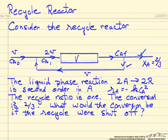2A goes to 2R is the reactor reaction in second order, and the question is suppose we shut off this recycle, then what happens to the conversion?